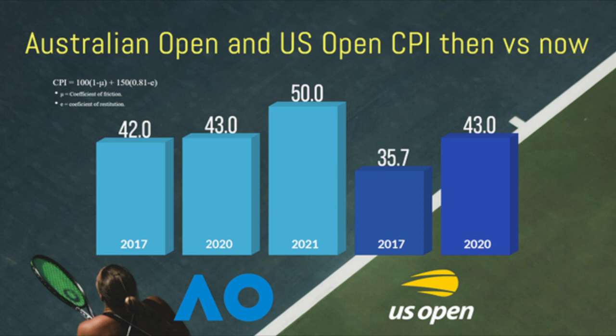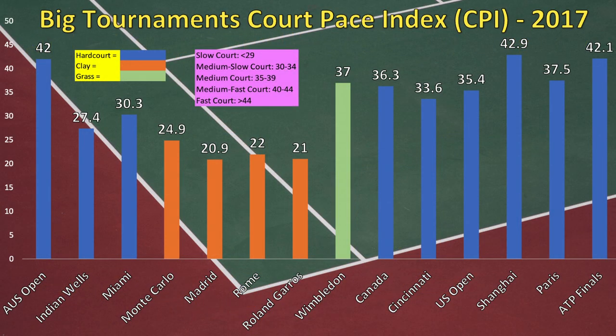Here's another graphic for the Australian and US Opens. As mentioned, the CPI does change from year to year. You can see that both Majors have gotten substantially quicker since 2017 — the Aussie Open would be considered extremely quick in 2021, and the US Open a borderline fast court in 2020 as well. I wish it were easier to find these numbers from year to year, but it does require some digging.